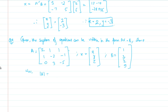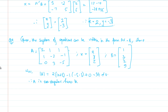First we need to check for the singularity of A. Determinant of A is equal to 2 times (10 + 3) minus 1 times (-5 - 3) plus 0, taking column 1. That equals 34, which is not equal to 0. Therefore we can state that A is non-singular, and hence its inverse exists.